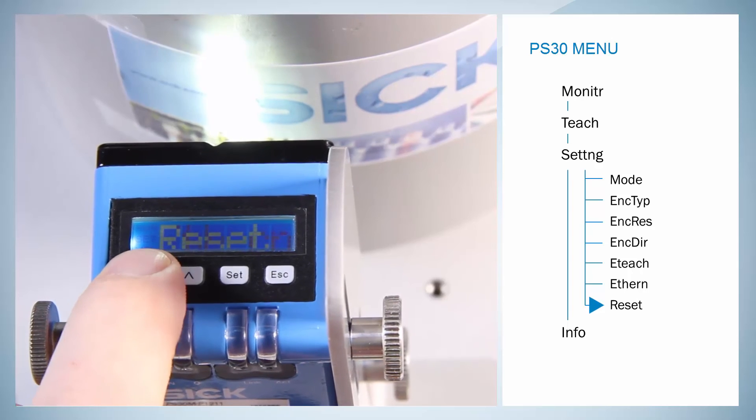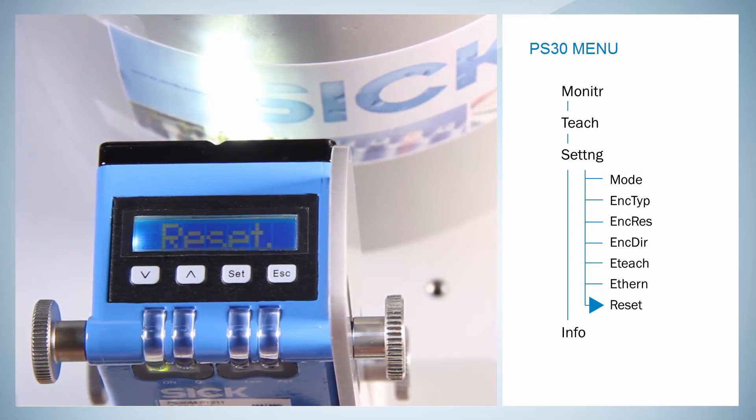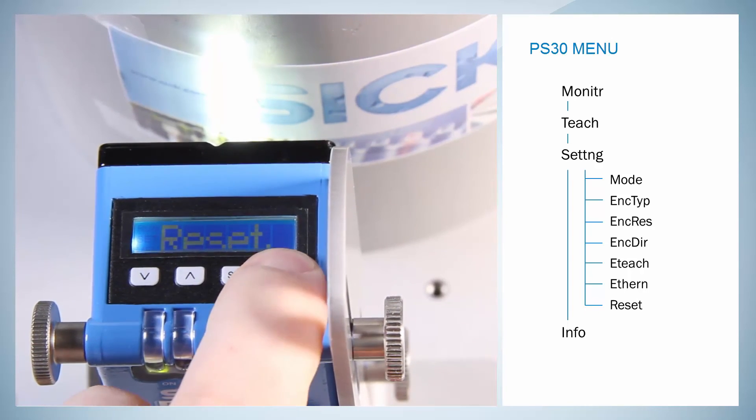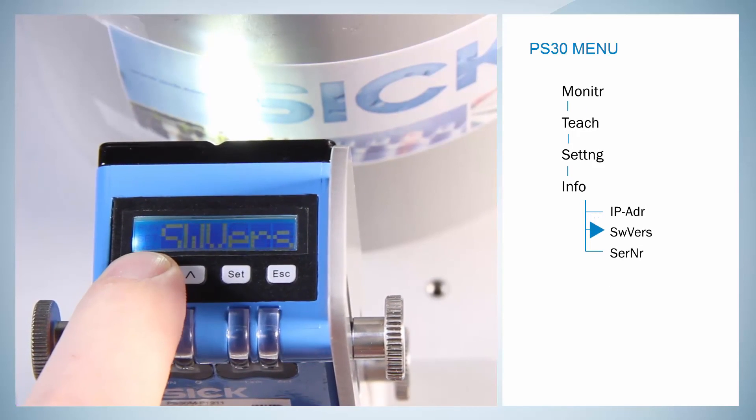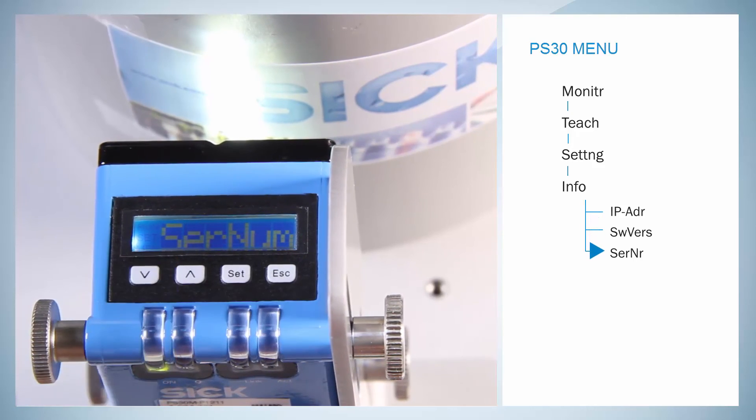By reset, the sensor can be set into factory settings. The fourth main menu is Device Info. It shows the current IP address, the current software version, as well as the serial number.